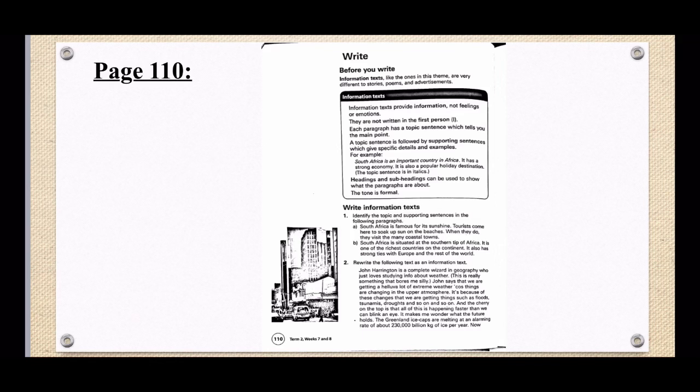Question one says identify the topic and supporting sentences in the following paragraphs. So what you will have to do is rewrite A and B and then underline or circle the topic and supporting sentences.